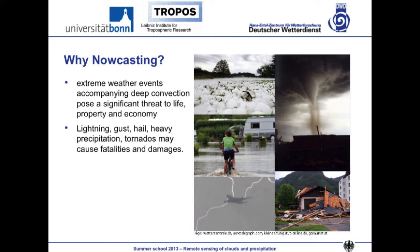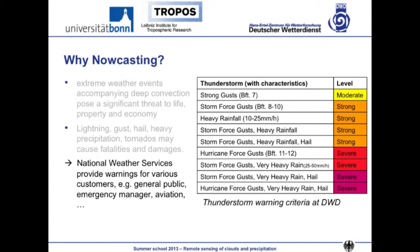Why do we want to do nowcasting? Why do we want to look at severe weather events? For a short time period, extreme weather events can be deadly and a threat to life, property, economy, and so on. There are lots of phenomena that are important, like hail, tornado, heavy precipitation, wind gusts, and so on. That's why National Weather Services have to provide warnings for various customers — the general public, emergency managers, aviation, and so on.